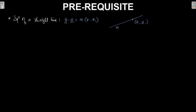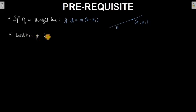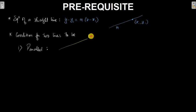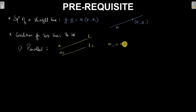Next, you need to know the condition for two lines to be parallel. Say there are two lines l₁ and l₂ with slopes m₁ and m₂ respectively. From class 11, l₁ and l₂ will be parallel if m₁ equals m₂. That is the condition for two lines to be parallel.